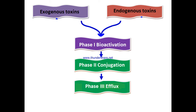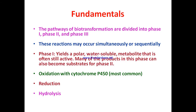Exogenous toxins enter the body through lungs, skin, etc. Endogenous toxins are produced as a result of the body's own metabolism and as metabolic byproducts of microbes living in the body. These all undergo phase one bioactivation, then phase two biotransformation — mainly conjugation processes — and phase three efflux. Some toxins, both exogenous and endogenous, directly enter phase two conjugation, bypassing phase one.